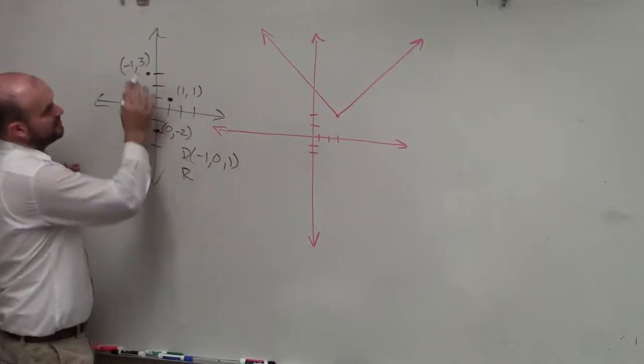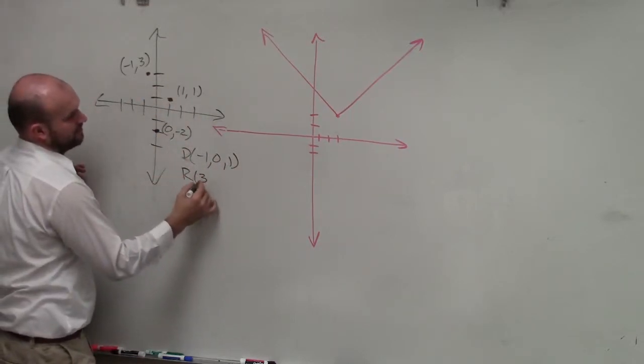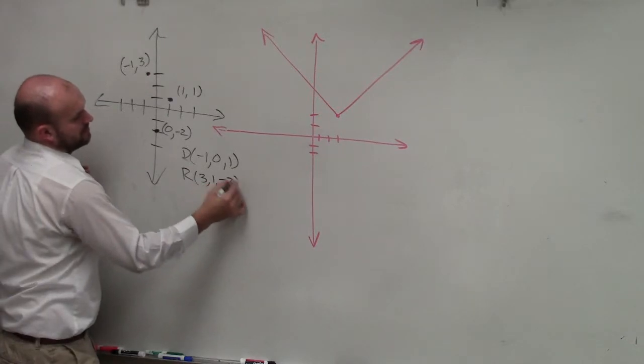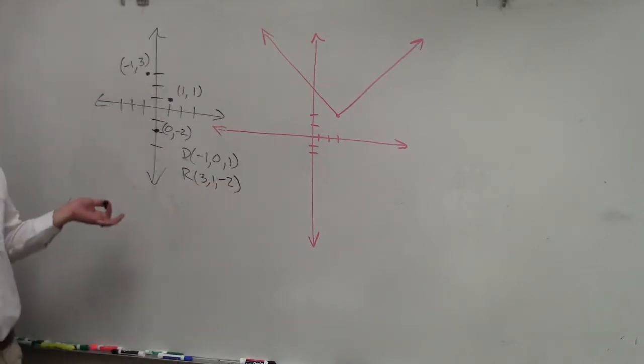The range is the set of all y values, 3, 1, negative 2. Just three numbers, very simple, right? Pretty easy.